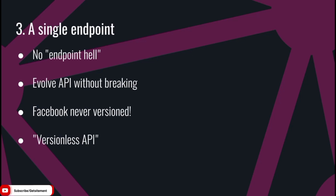Thirdly, GraphQL exposes just one endpoint for your entire API and it is constructed in a way that allows you to evolve your API without breaking backwards compatibility. In fact, Facebook says that they have never versioned their GraphQL API and that older versions of their applications still work with newer versions of their API. It's said that GraphQL is the last API that you should deploy. Pretty awesome, right?